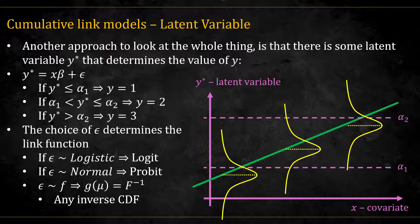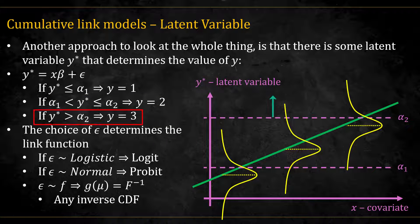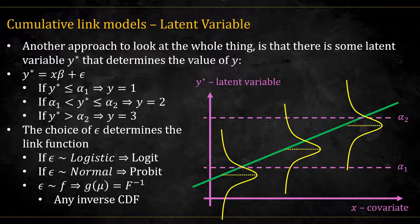There is another approach to handle the whole thing, and that is to assume that there is some latent variable, y star, which determines the value of y. If y star is below alpha 1, then y is equal to 1. If it's between alpha 1 and alpha 2, then y is equal to 2. If it's above alpha 2, we get 3. The choice of the random component, epsilon, determines the link function we are going to use. If we choose epsilon to distribute standard logistic, we'll get the logit. If we choose standard normal, we'll get the probit. But we can also choose any other distribution, and the link function will then be the inverse of that distribution cdf, or the quantile function of that distribution.